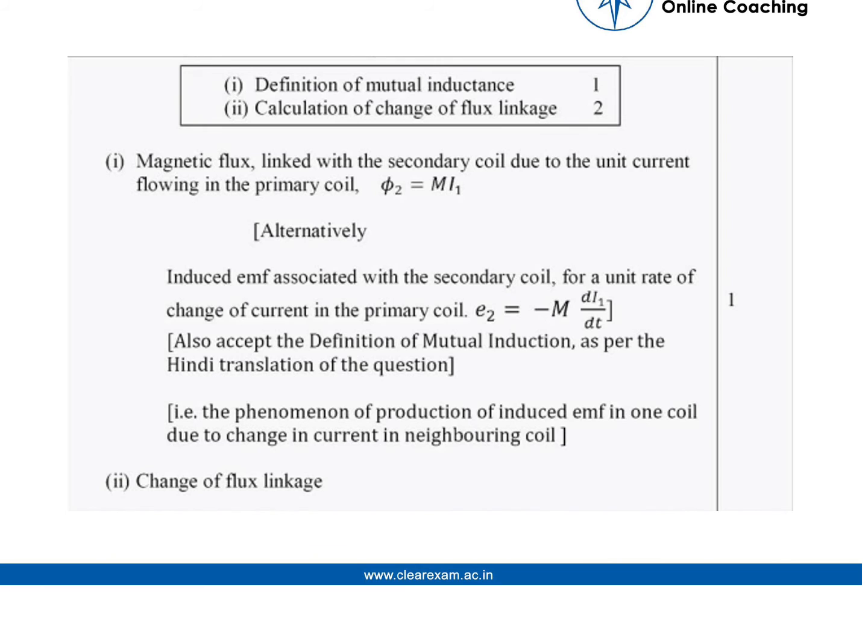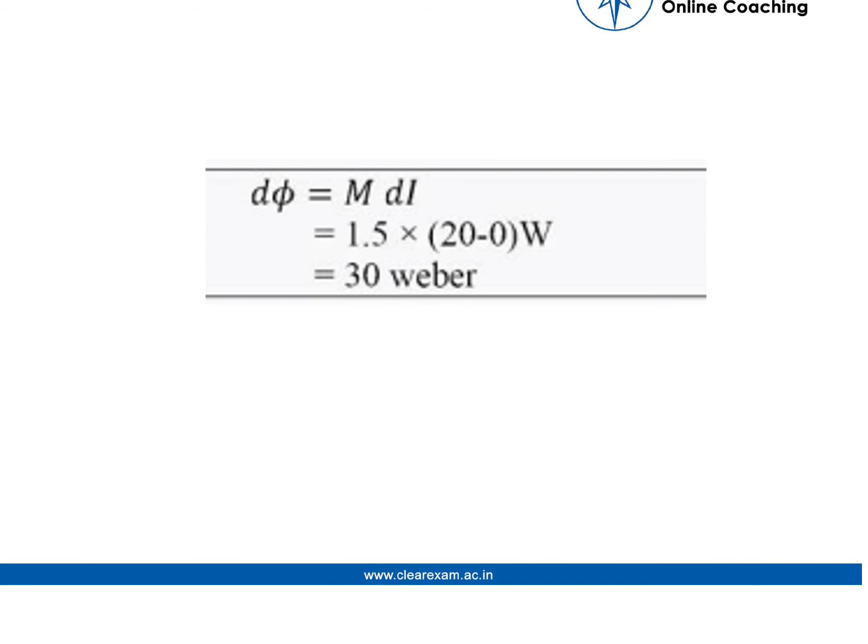And now we will calculate the change of flux linkage. So to calculate the flux, dφ = M dI, where M is the mutual inductance and dI is the change in the current. So they have given 1.5 mutual inductance.